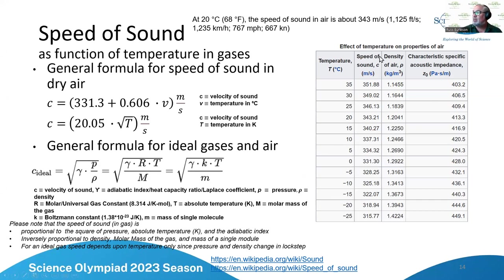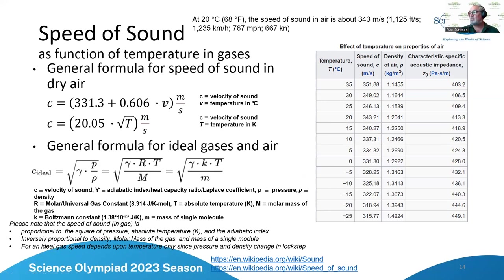Looking at speed of sound in air at different temperatures, at about 20 degrees Celsius we get 343 meters per second — the most important value. The density and acoustic impedance are also shown. As temperature goes up, speed of sound gets faster; as temperature goes down, speed of sound gets slower — and eventually approaches zero at absolute zero, where sound doesn't propagate.